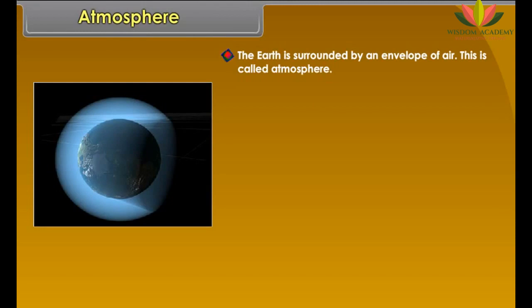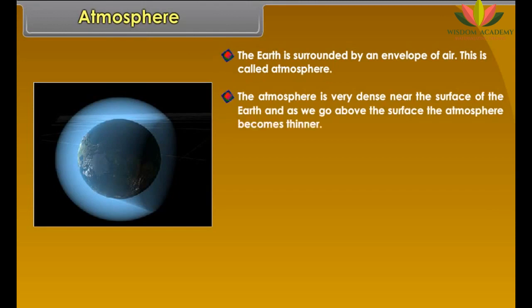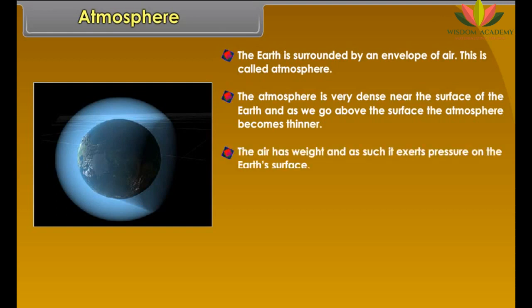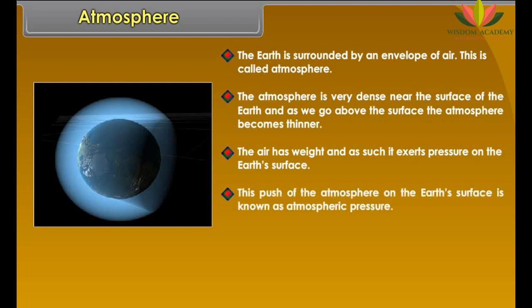Extensive low lands with a relatively flat or level surface are called plains. Plains located along the coast are called coastal plains. Most rivers in their lower courses deposit alluvial material. The northern plains of India are formed by such alluvial deposition by the Ganga and its tributaries.